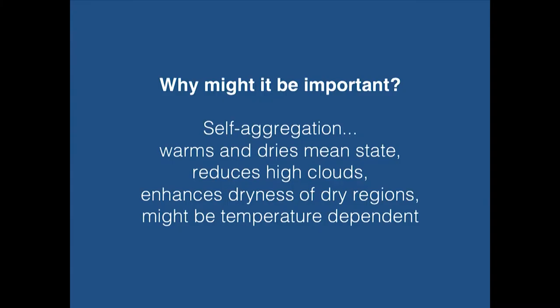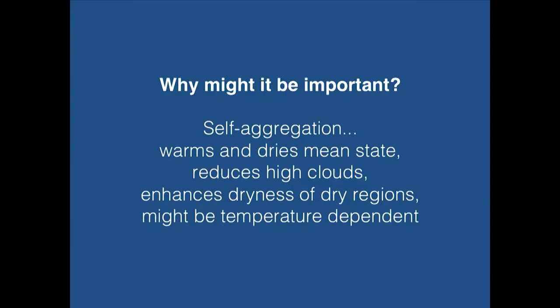So why might self-aggregation be important? It warms and dries the mean state, reduces high clouds, enhances the dryness of dry regions, and might be temperature dependent — though the exact nature of that has yet to be determined. This leads us to ask: given all of this, what is the effect of self-aggregation and its variations on climate sensitivity — on the response of global mean temperature to a radiative forcing?